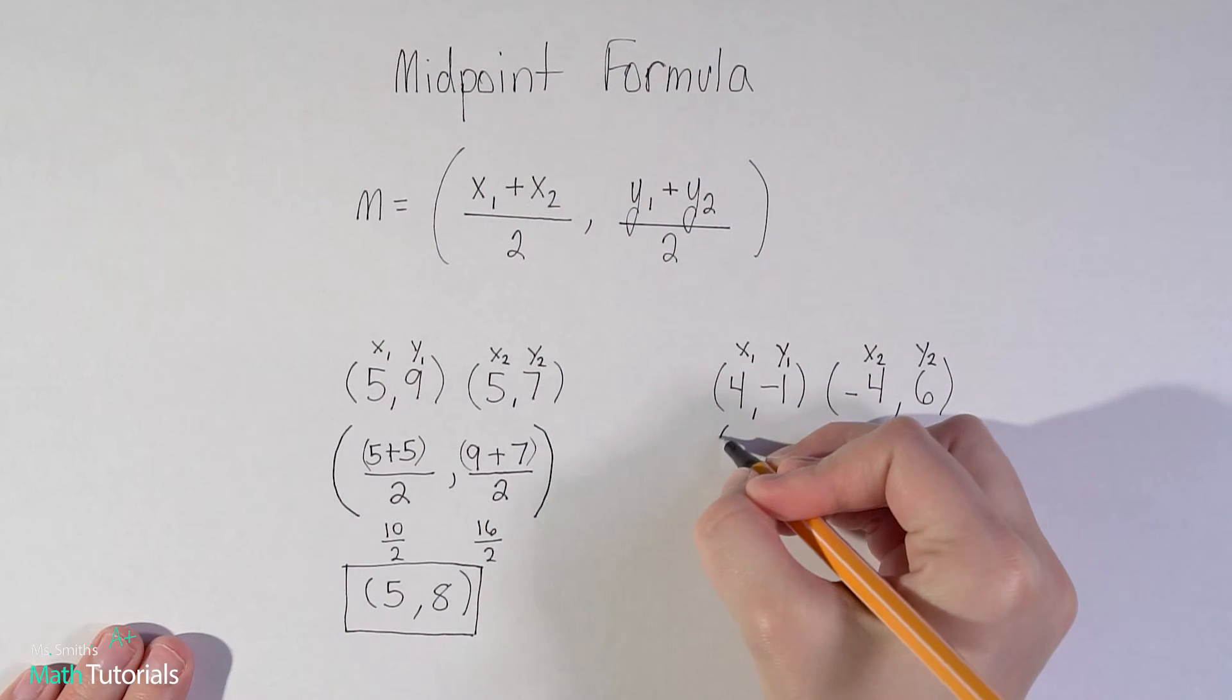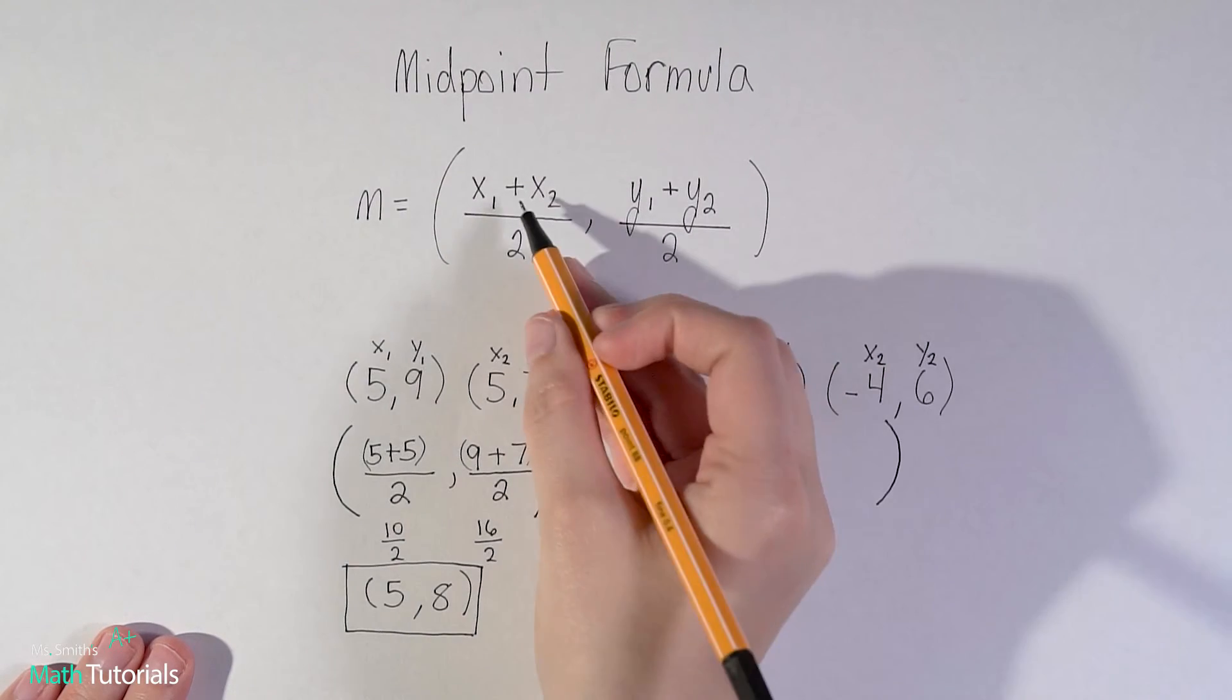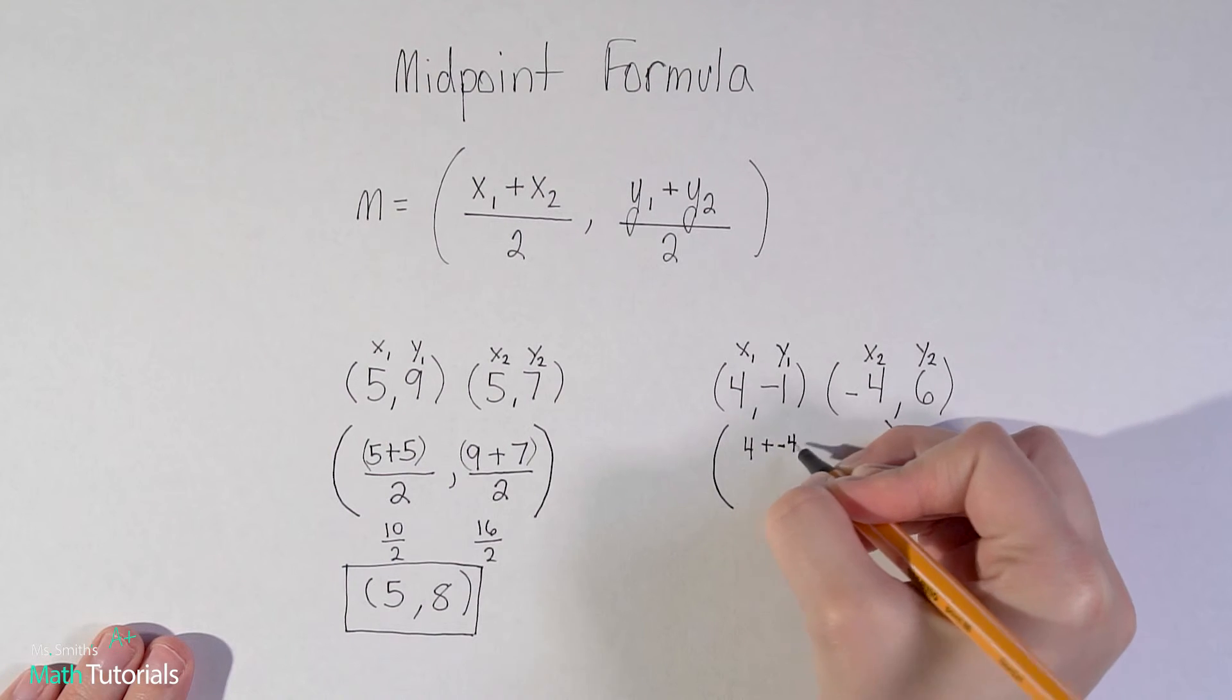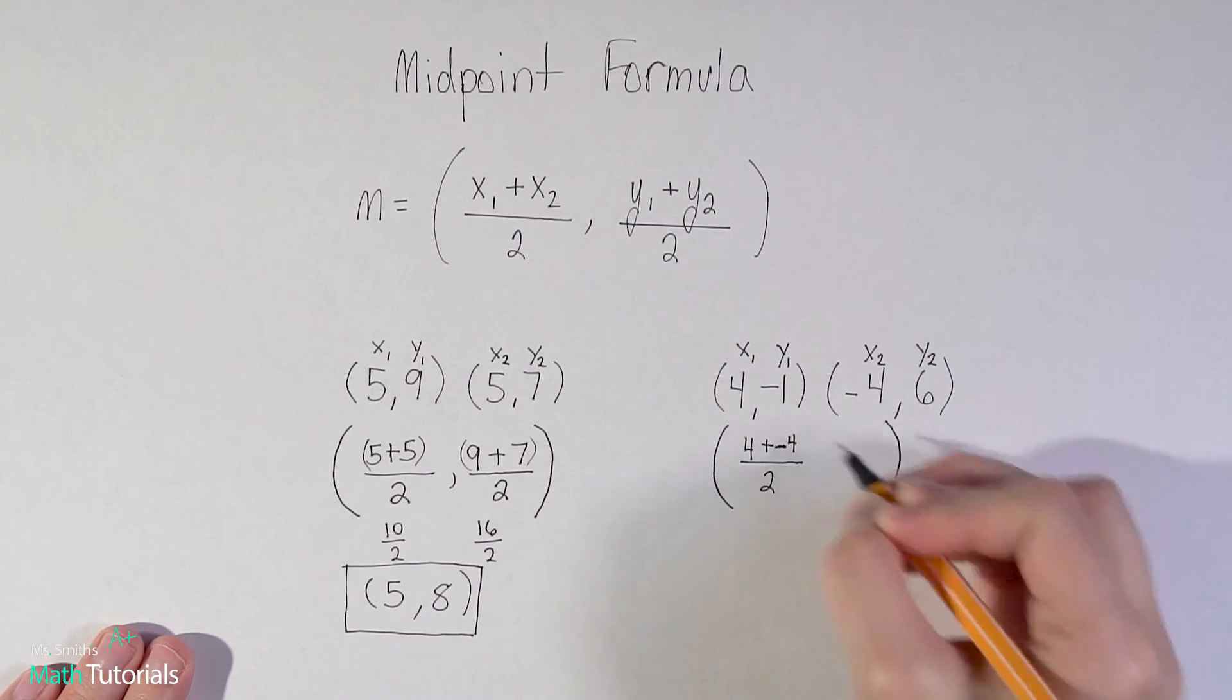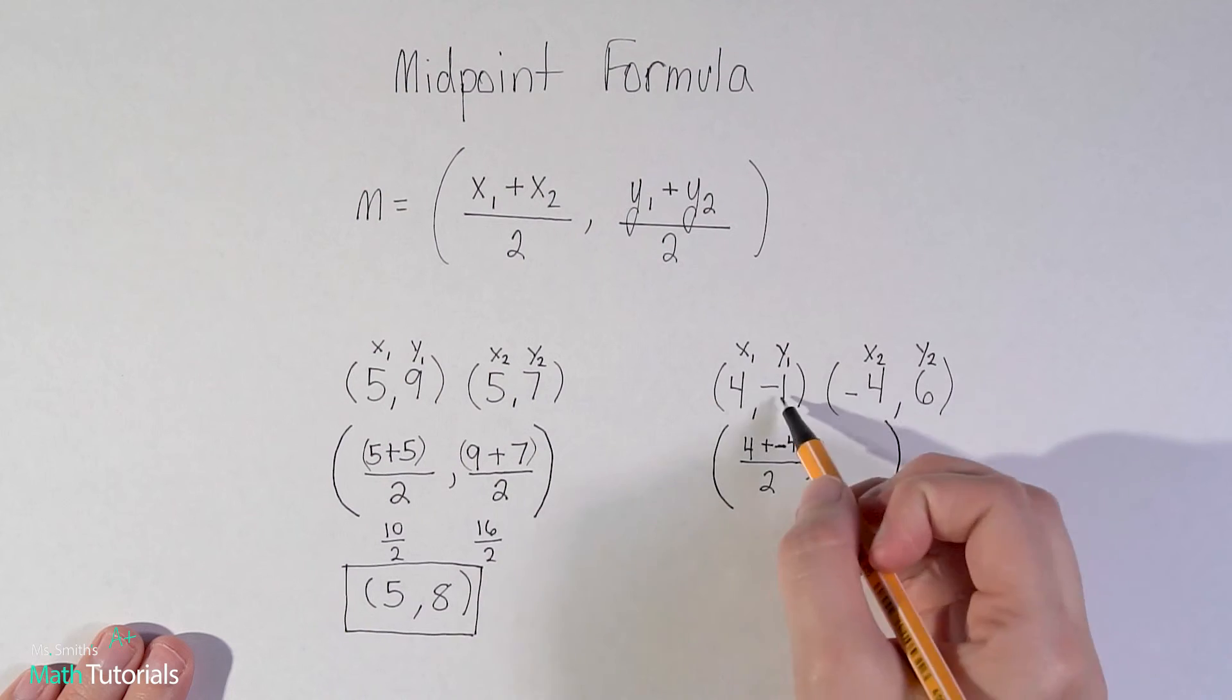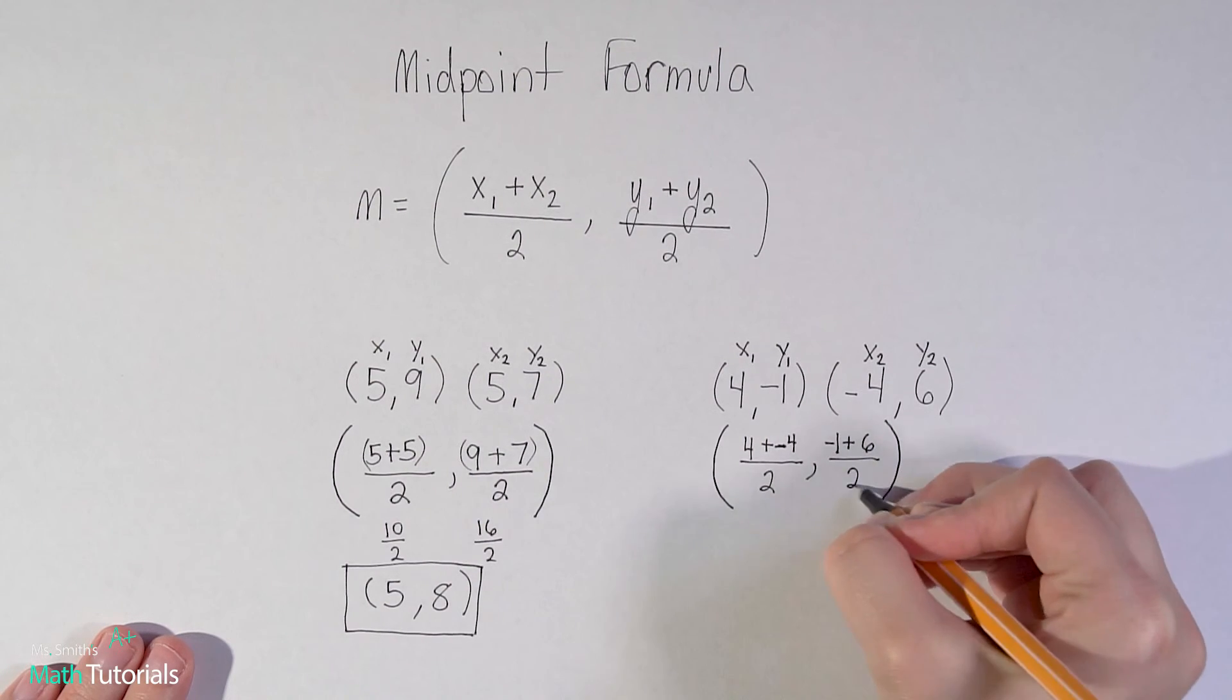Let's lay out our two big parentheses. x1 which is 4 plus x2, so plus negative 4 - or if you wanted to just write minus 4 that says the same thing - divided by 2. And y1 negative 1 plus y2 which is 6, divided by 2.